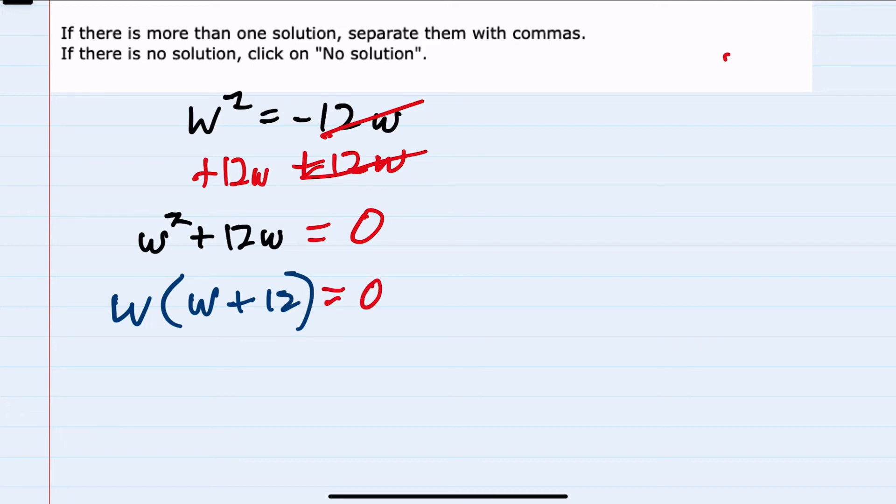Looking at this, we now have multiplication on the left equaling zero. So if two expressions are being multiplied with the result of zero, that means that either the first expression, w, would have to be zero, or the second expression could be zero. All this is saying is that when two things are multiplied, if the result is zero, one of those two things has to be zero.